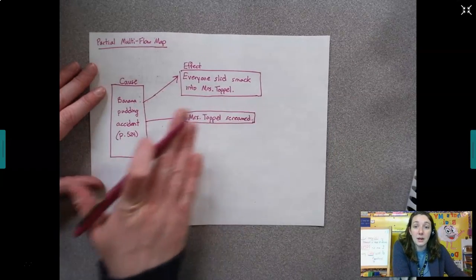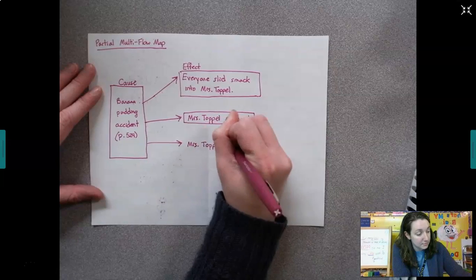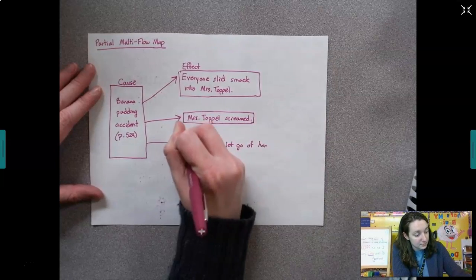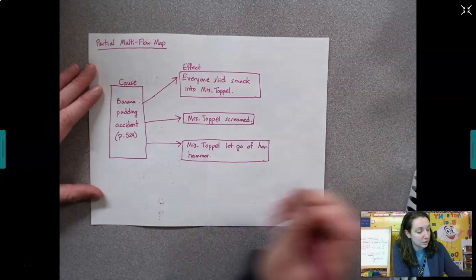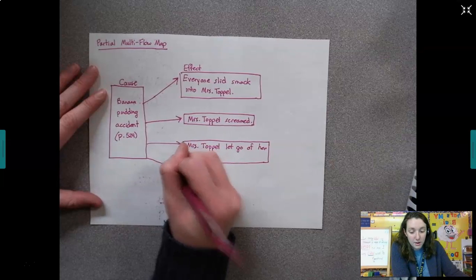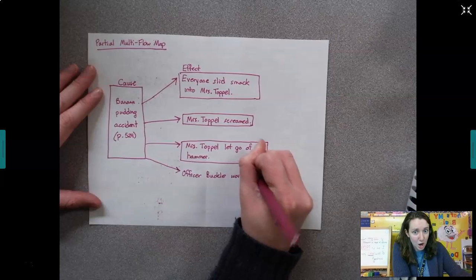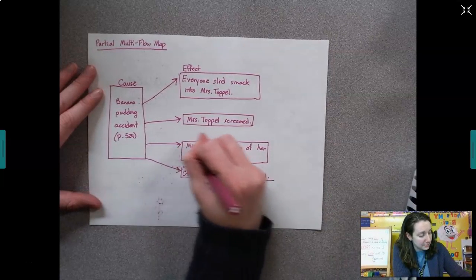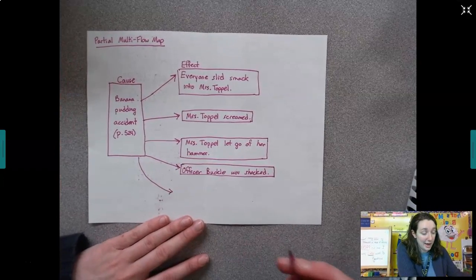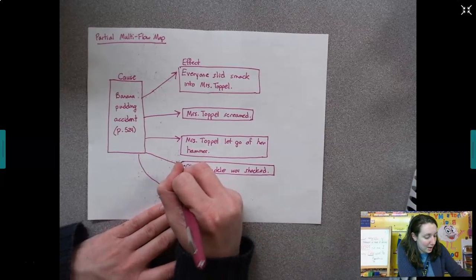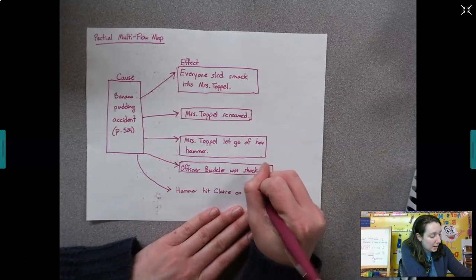The effects were that everyone smacked into Mrs. Topple. Mrs. Topple screamed. Mrs. Topple let go of her hammer. Remember, we like to write before we make our boxes to make sure they fit really well. Another effect was Officer Buckle was shocked, because the next day he got all those letters showing what happened. And one more effect is that hammer hit Claire. Remember, Claire is a little girl who always sent the star letters. She's the one that wears her helmet, which is good because the hammer hit her.